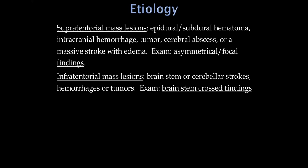Infratentorial means a brainstem or cerebellar lesion — a large stroke, pontine hemorrhage, or tumor. Just as with brainstem lesions in the stroke lecture, the classic finding is ipsilateral cranial nerve deficits with contralateral motor or sensory deficits. For example, with something in the midbrain, the patient may have an ipsilateral third nerve palsy and upper motor neuron findings on the opposite side of the body.